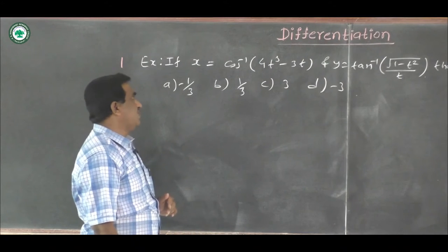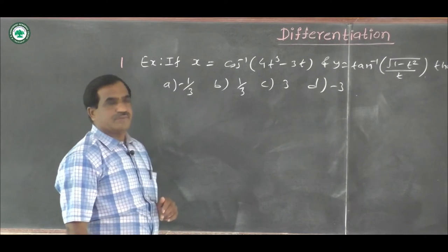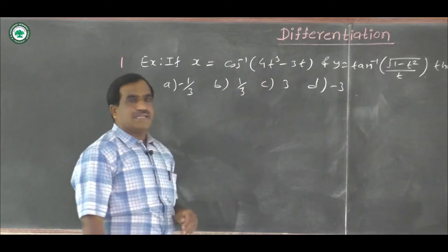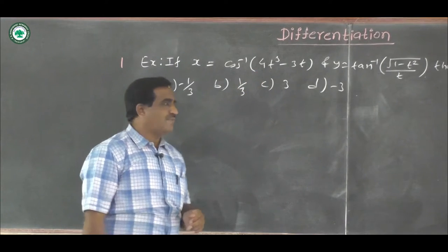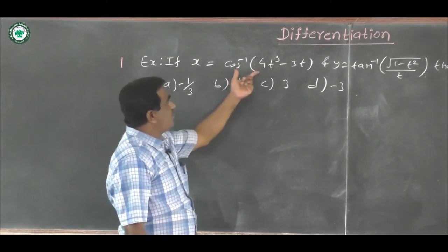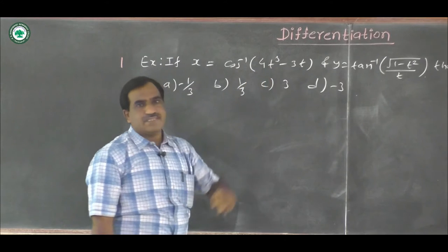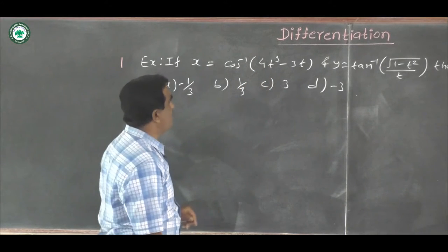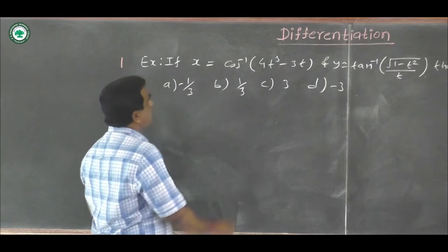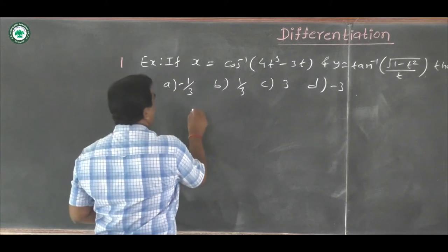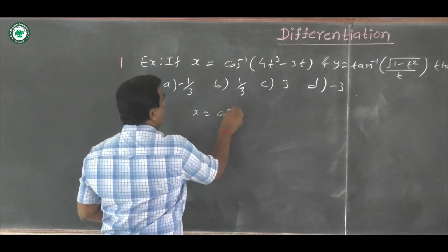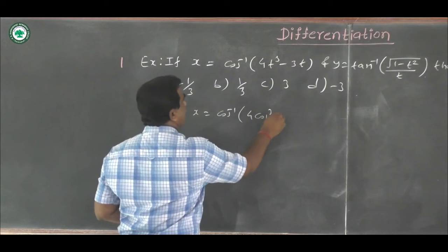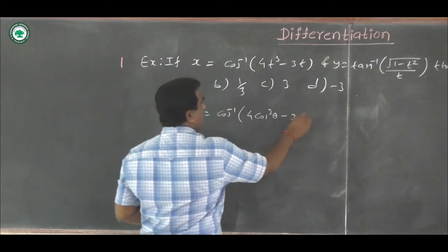First, we take a substitution in the given function to simplify using the substitution method. We put t equal to cos θ. Then this equation becomes x is equal to cos inverse of 4cos³θ minus 3cosθ.